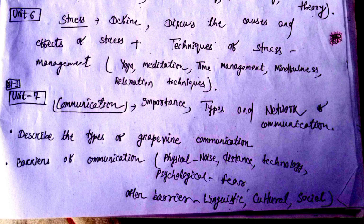In unit seven, define communication, explain its importance, tell the types and the network of communication. Also describe the types of grapevine communication. You may be asked to write a short note on grapevine communication and its types.